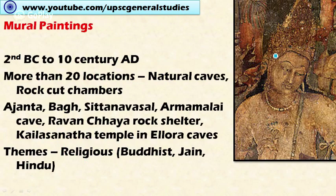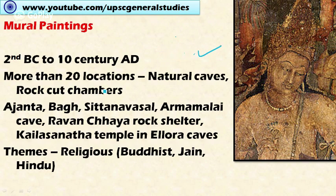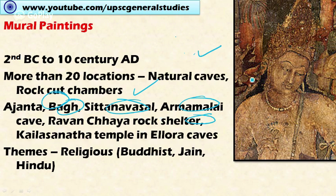In mural painting, the prominence was seen during 2nd century BC to 10th century AD. Mural paintings are found in more than 20 locations during this period, in the form of natural caves, rock-cut chambers, and other structures. The most important paintings include Ajanta Caves, Bagh Caves, Sittanavasal Caves, Ambaramalai Cave, Ravan Chhaya Rock Shelter, and the Kailasanatha Temple in Ellora Caves.